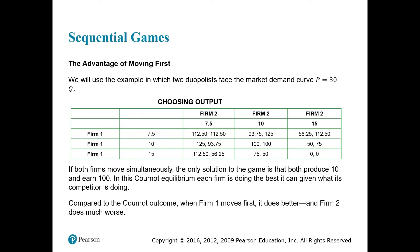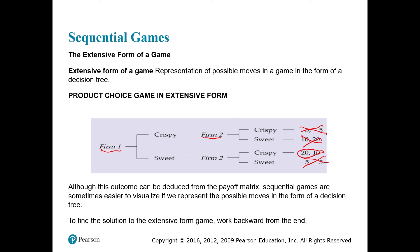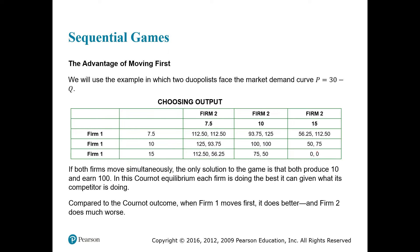In a sequential game, the firm deciding first has more options available, but must consider what the other firm's reaction will be. However, they have a first mover advantage. To illustrate this, we use an example in which two duopolists face the market demand curve P = 30 - Q, and firms can set price equal to 7.5, 10, or 15.